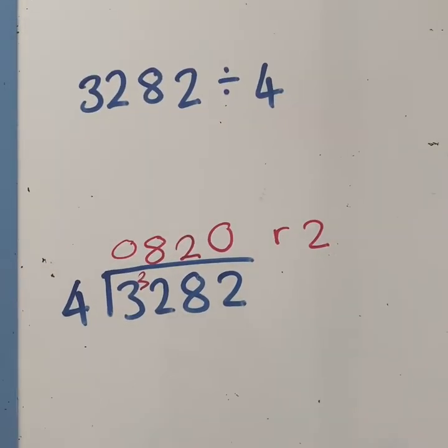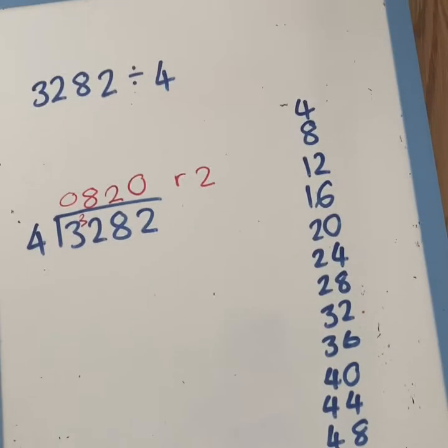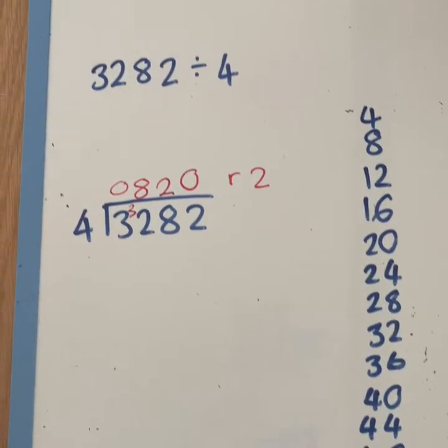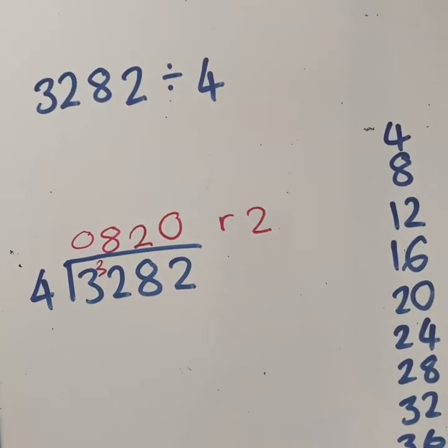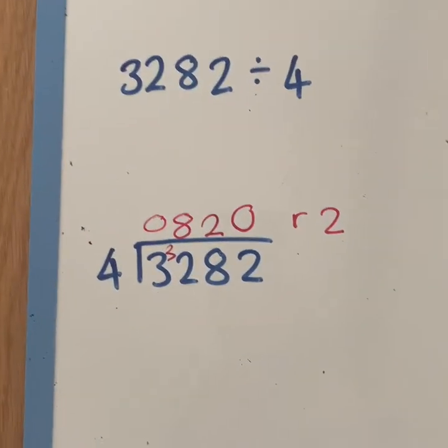That was nice and fast and nice and easy. I recommend always writing out your times tables if you're not confident with them. Now I'm going to see if I can convert this remainder into a decimal.